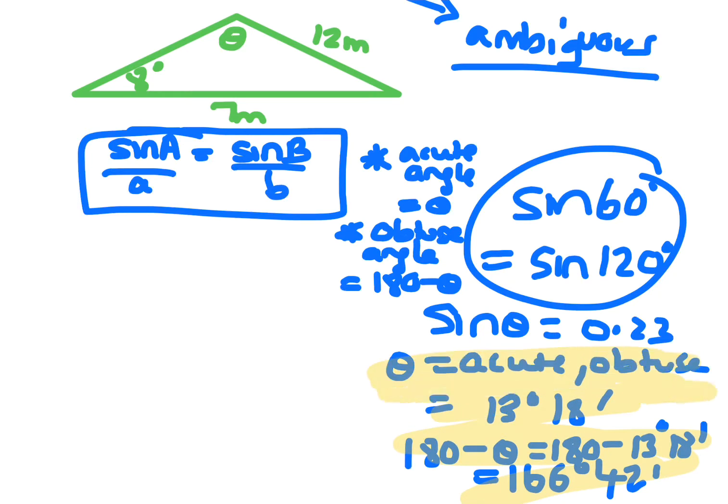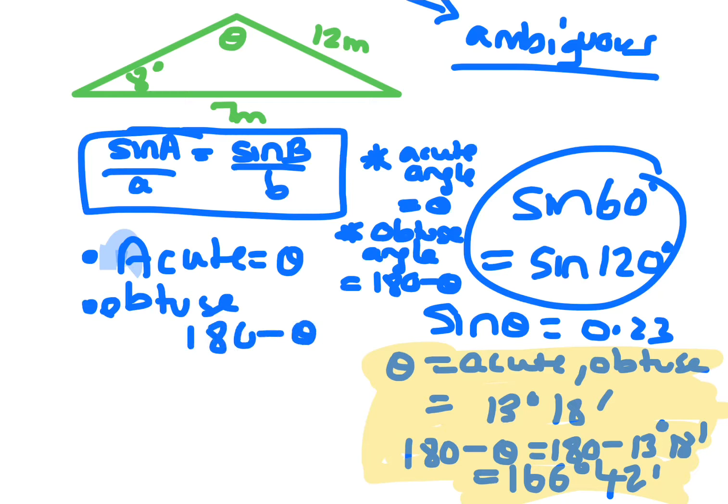When you have sine theta equals something, once you go through and you find the angle, if you have the acute angle which is theta, then the obtuse angle you just take it away from 180. So it's 180 minus theta.